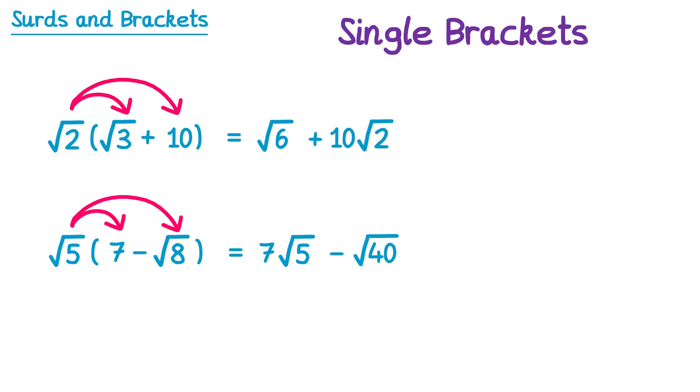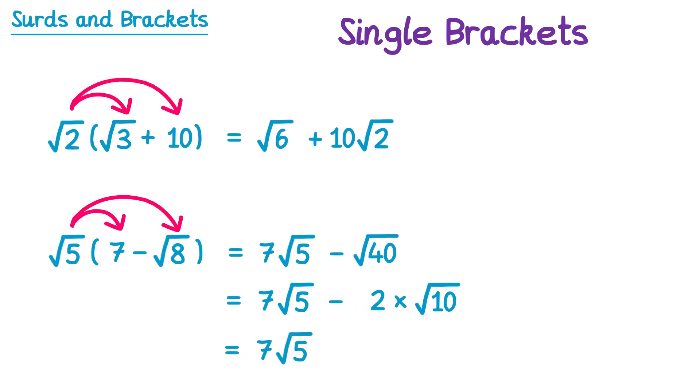The square root 40 can be simplified. If we keep the 7 root 5 and rewrite the square root 40 as root 4 times root 10 — the square root of 4 is just 2 — so we have 7 root 5 subtract 2 root 10.